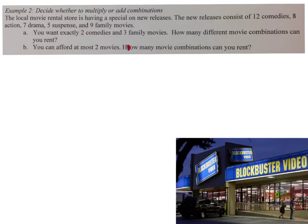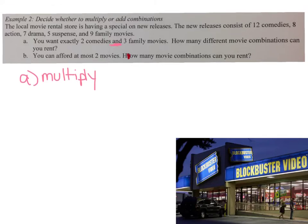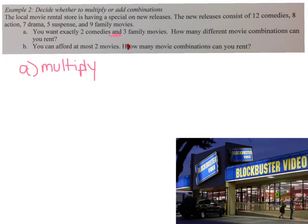Part A. This is an AND situation. You want 2 comedies and 3 family movies, so we know that we're going to be multiplying. For the comedies, we want to choose 2 and there are 12 comedies to pick from. So we're going to do 12C2, 2 out of 12 comedies. Then we're going to multiply that by the combinations of family movies. There are 9 family movies and we're going to pick 3, so 9C3. We're going to multiply 12C2 by 9C3.